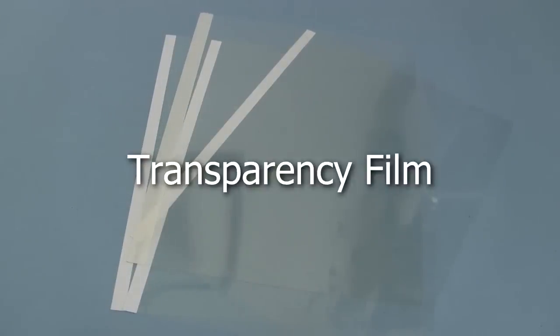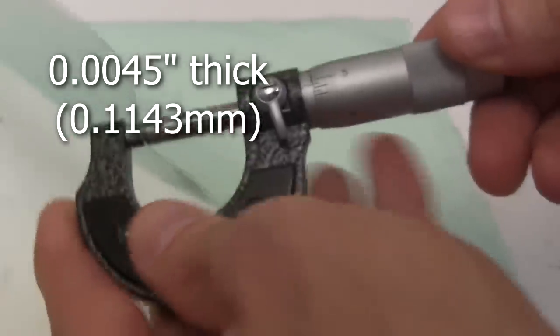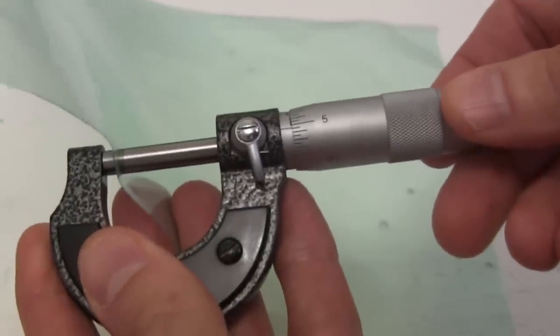You can buy them in packs of 50 or 100, but a place that does photocopying will often sell you just a few sheets for a lot cheaper. They're both .0045 inches thick. You want something very thin but that can handle high voltage.